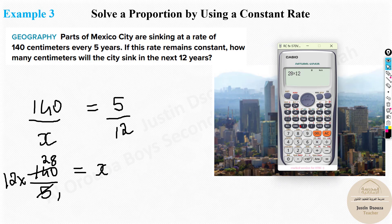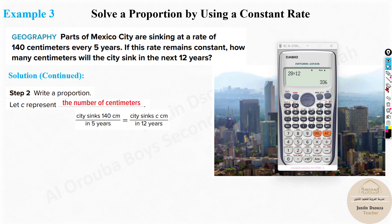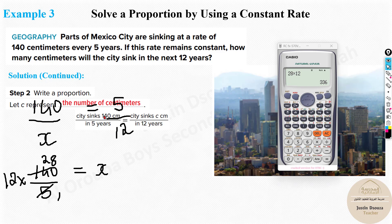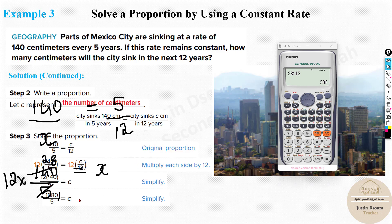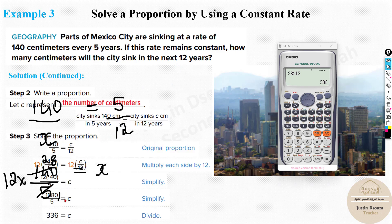So the answer is 336 centimeters. Let's verify — the textbook solution uses the same method, writing 140 divided by 5 equals x divided by 12, and the answer is also 336. Whether you write 140 over 5 equals x over 12, or rearrange it differently, the answer will be the same.